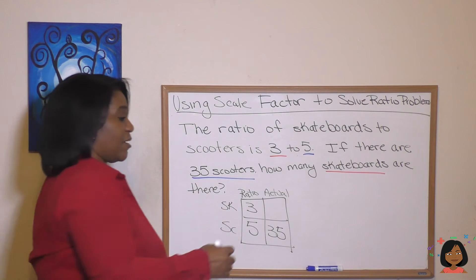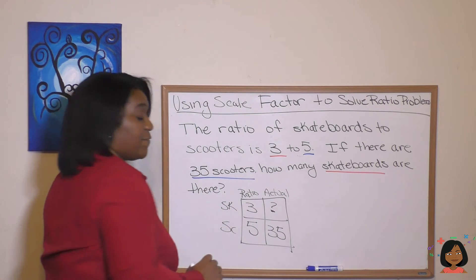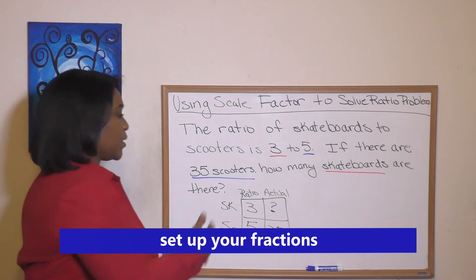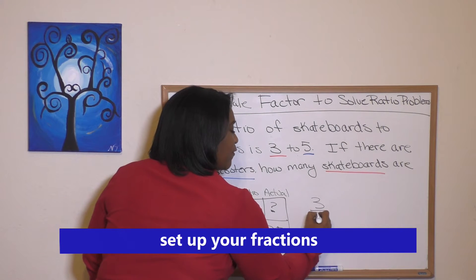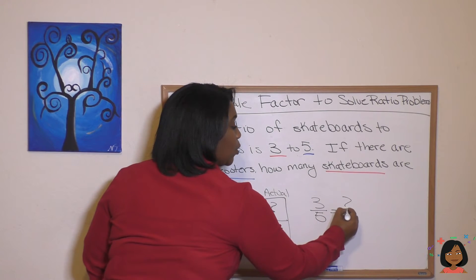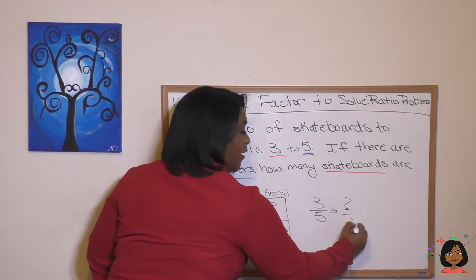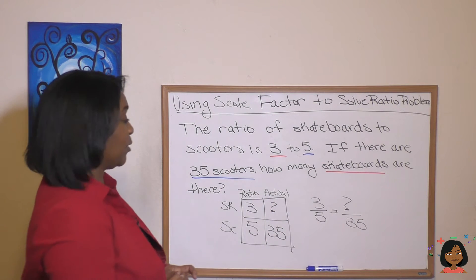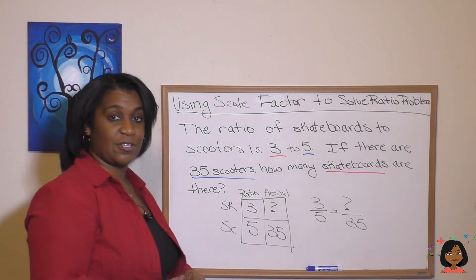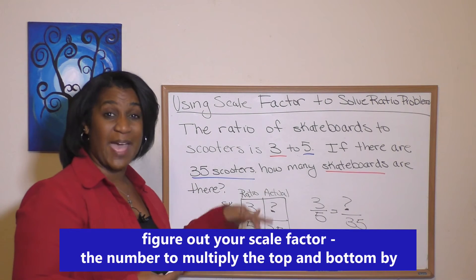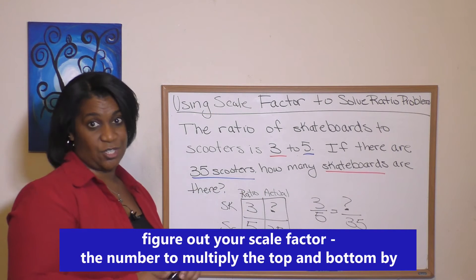How many skateboards are there? So we're trying to find out the number of skateboards. What I want to do is now set up some fractions. We're going to do three over five equals some number over 35. And we know how to do this. Really, we're just creating an equivalent fraction. But we need to figure out what number are we multiplying the top and bottom by to get this new fraction.